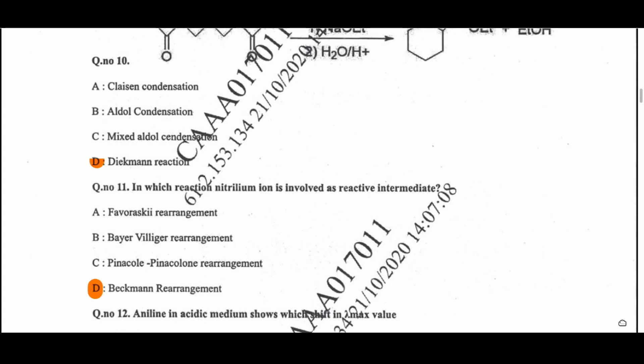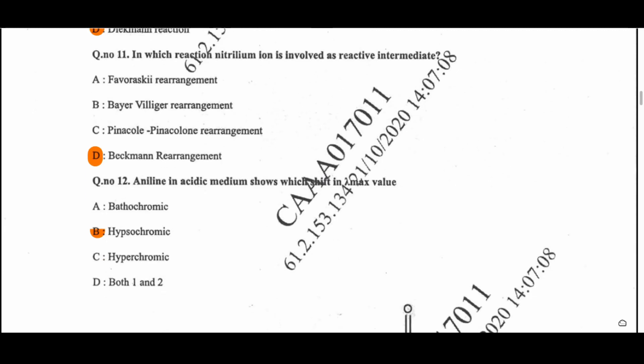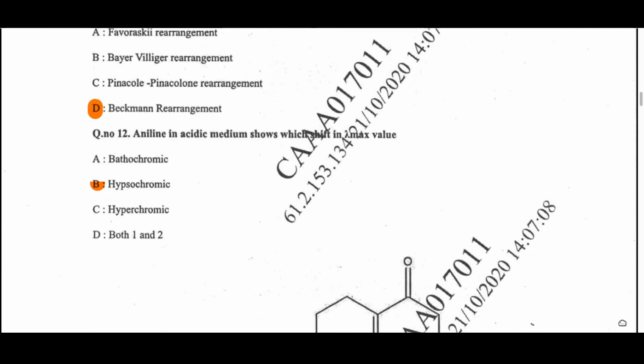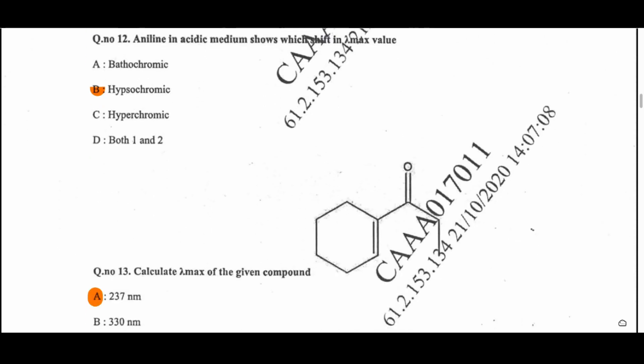Question 11: In which reaction is the nitrilium ion involved as a reactive intermediate? That is the Beckmann rearrangement, in which the nitrilium ion is an intermediate. Question 12: Aniline in acidic medium shows which shift in the lambda max value? That is a hypsochromic shift — absorption takes place at a lower wavelength in acidic medium due to protonation decreasing chromophoric length.